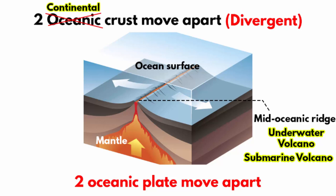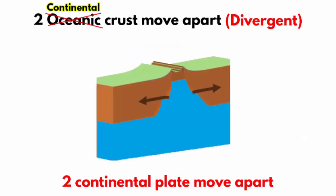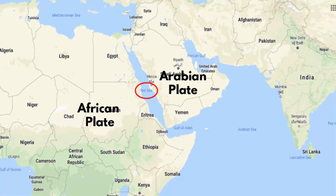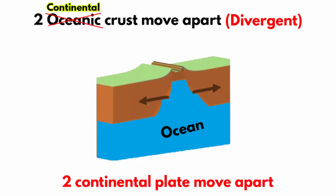Divergence also happens between two continental plates — that's how new oceans are formed. Volcanoes don't form that way; only oceans are formed. The exact reason as to why two continental plates diverge, where and how it happens, is still being studied. The best example on Earth today is the Narrow Red Sea, where the Arabian plate has pulled away from the African plate — a perfect example of what happens when two continental plates move apart from each other.